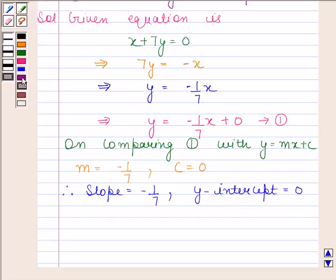Hence, the given equation in slope-intercept form is y equals minus 1 by 7 into x plus 0. Its slope is minus 1 by 7 and its y-intercept is 0. This is our required answer. This completes the session. Bye and take care.